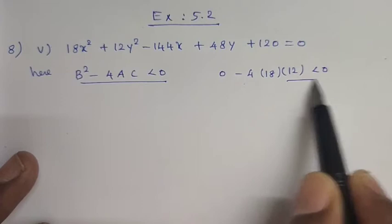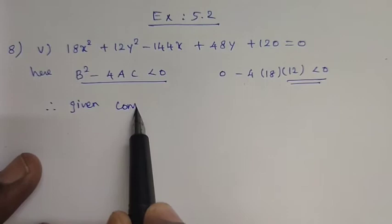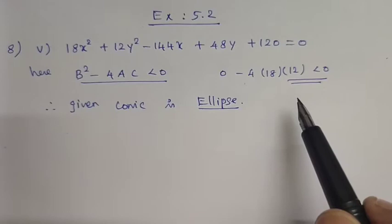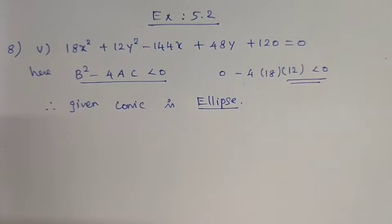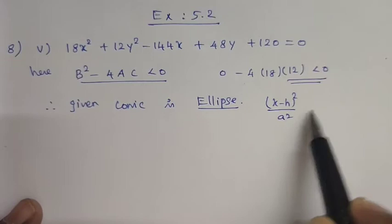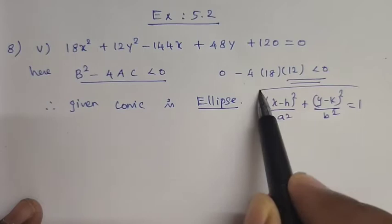If we convert the ellipse to standard form, we change the type. If there is a major axis along the y-axis, we have to convert it into the general format: x minus h, the whole square divided by a squared, plus y minus k, the whole square divided by b squared, equal to 1. We must identify the major axis as either x-axis or y-axis.